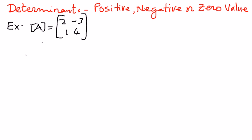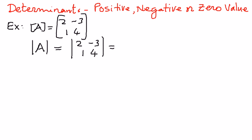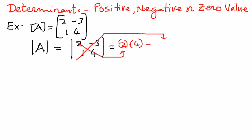Determinant of A, like that, is equal to just the numbers 2, negative 3, 1, and 4, with lines on the side, is going to be equal to: we are going to pick the product of the elements along the major diagonal and then multiply them out — 2 times 4 — minus the elements along the minor diagonal, the product of that: 1 times negative 3.